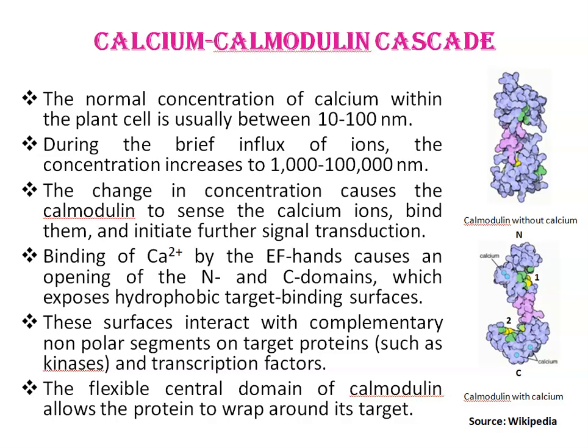Now, the calcium-calmodulin cascade in plants. The normal concentration of calcium within the plant cell is usually between 10 to 100 nM. During the brief influx of ions, the concentration increases to 1,000 to 100,000 nM. This change in concentration causes calmodulin to sense the calcium ions, then bind them and initiate further signal transduction. Binding of calcium by EF-hand motifs causes an opening of the N-terminal and C-terminal domains, which exposes hydrophobic target binding surfaces.